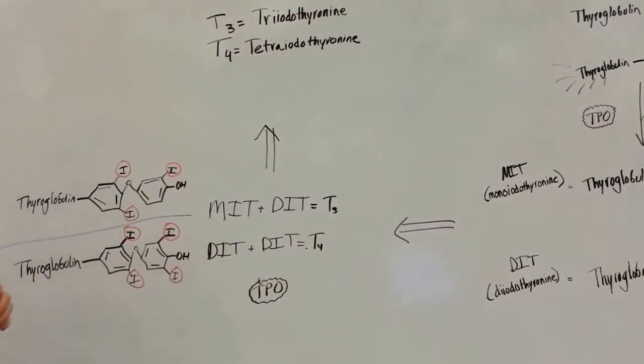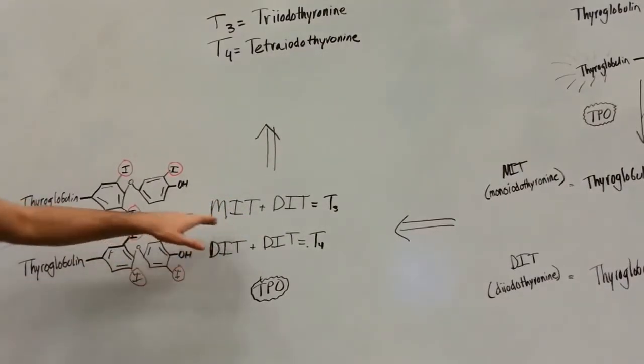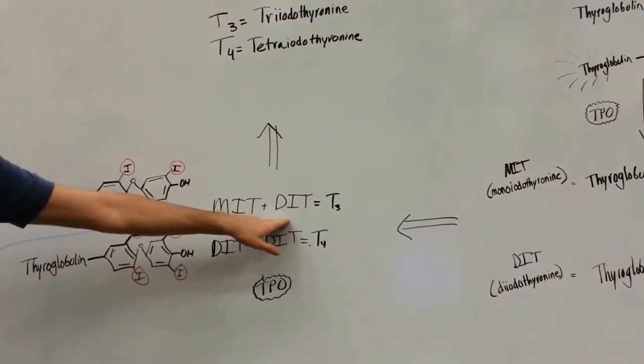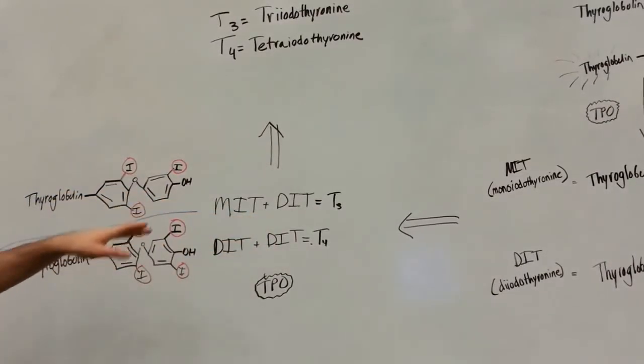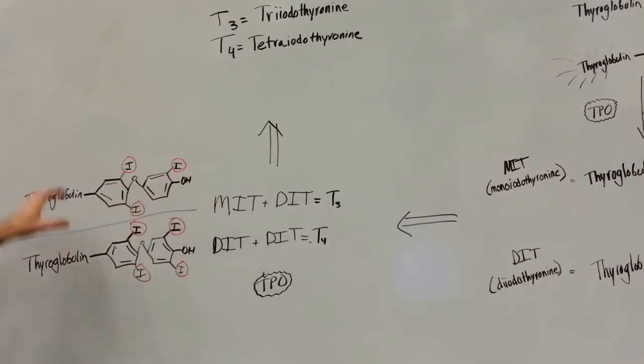We're going to take what we had from before, our MIT and our DIT, and we're going to combine those. So we have two possible combinations. You have one MIT and a DIT. And if those combine, you'll have three iodines. So you're going to have T3 hormone.